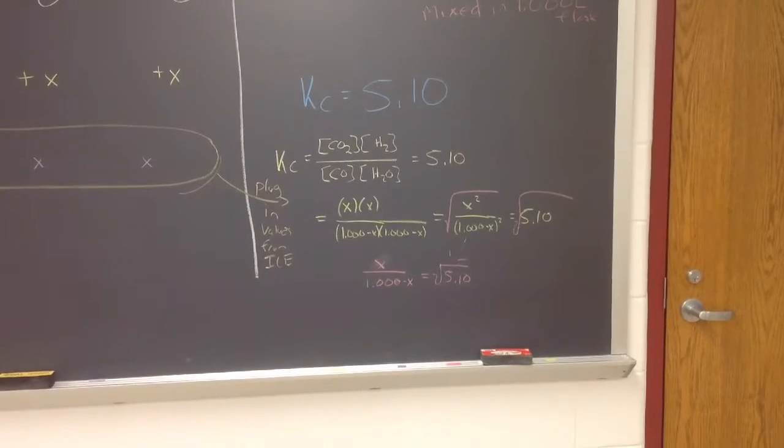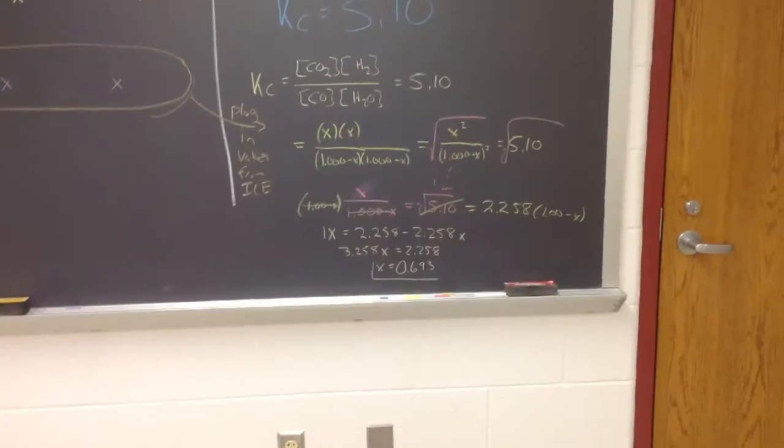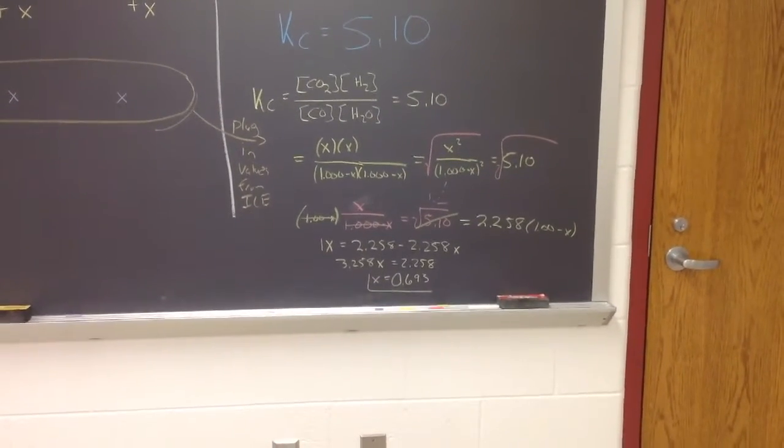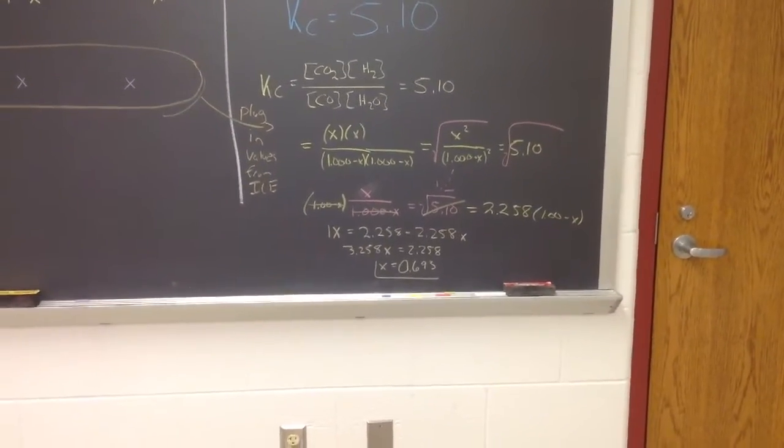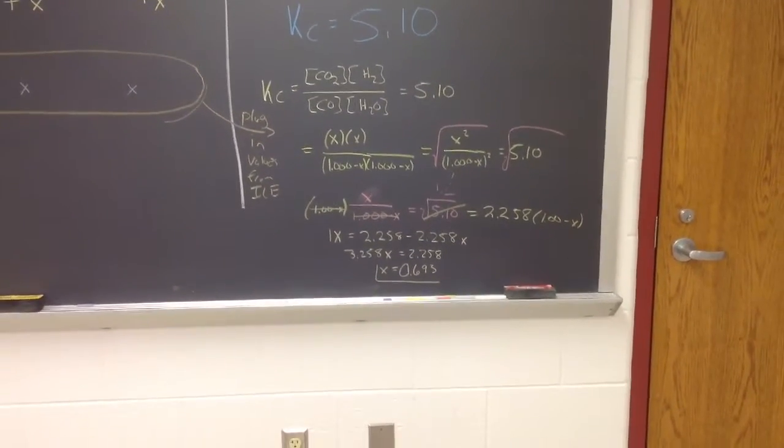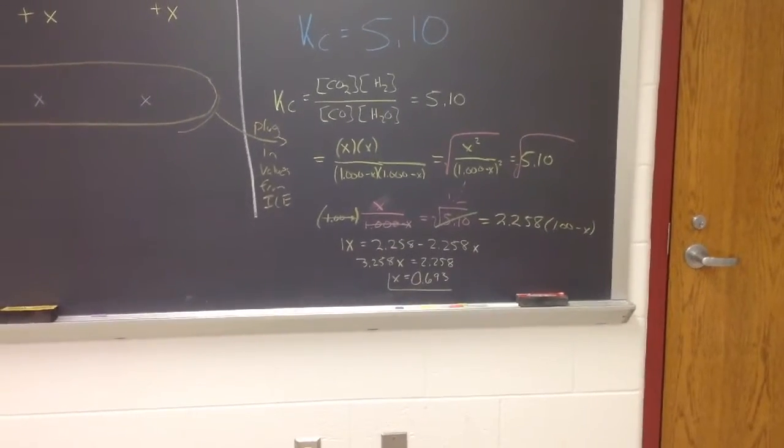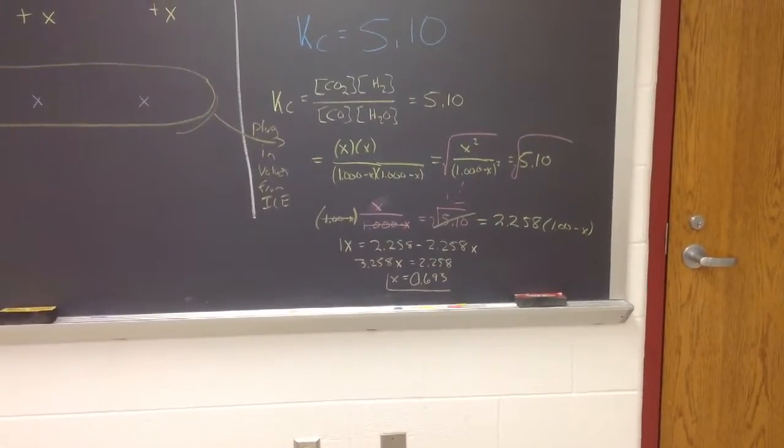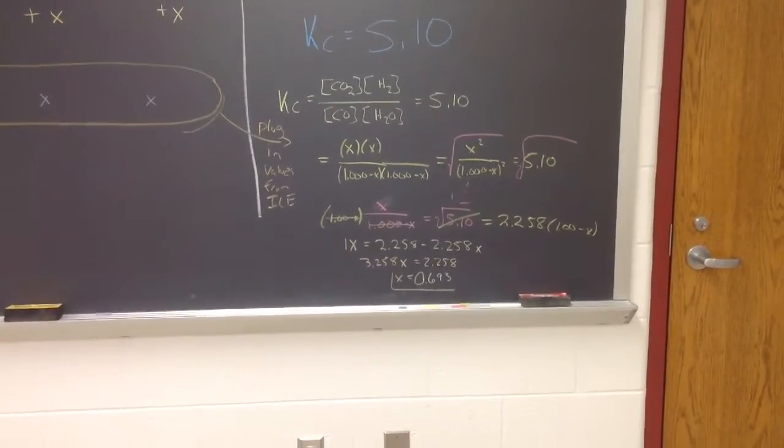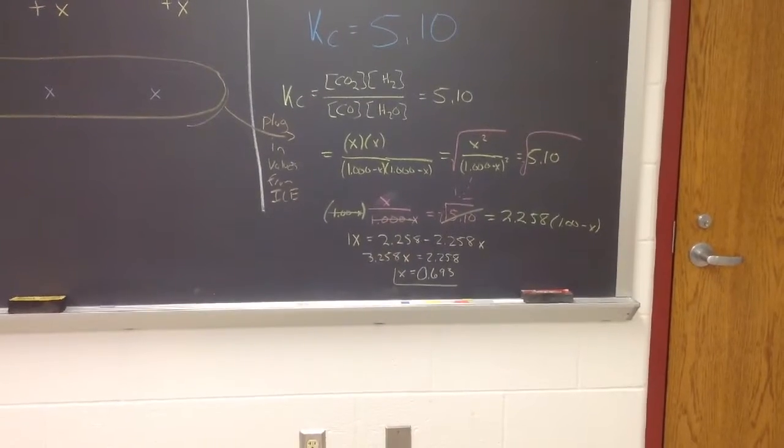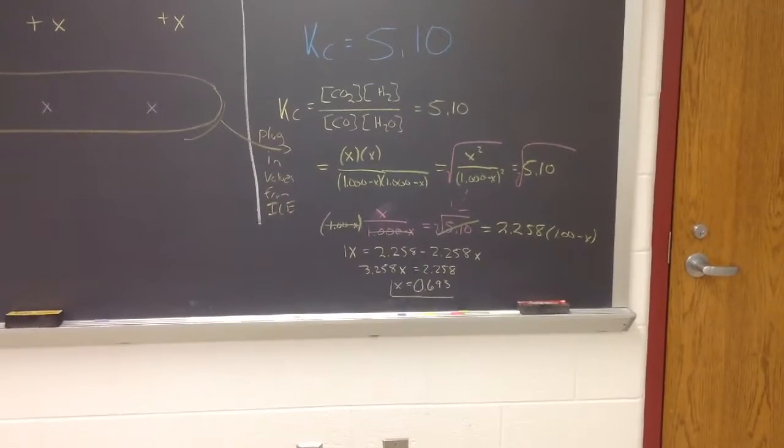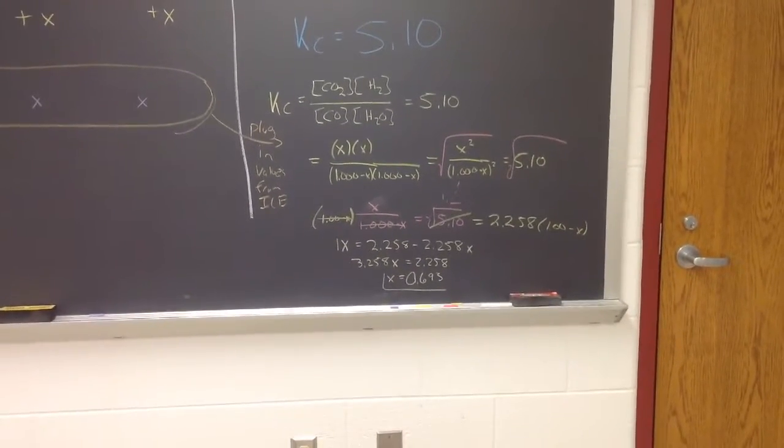So now I've done some math here, and I've solved for the square root of 2.258, and I've multiplied both sides times 1 minus X to remove that and make it equal to 1X equals 2.258 minus 2.258X. That's rounding, obviously. If I then move the X's both to the left side, I get 3.258X times X equals 2.258. And if I solve for X, now I get approximately 0.693 in this case.